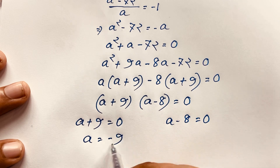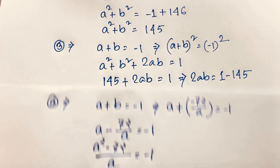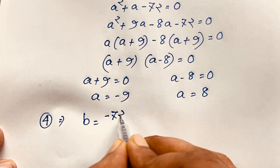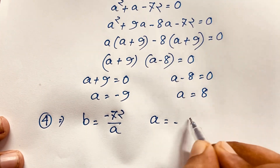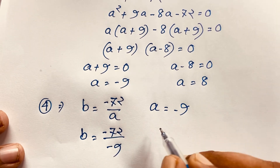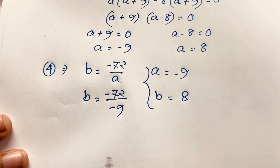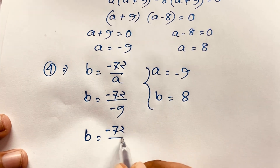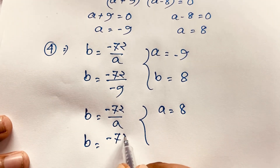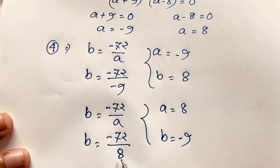From these cases: a equals negative 9, or a equals 8. Using b equals negative 72 over a: when a equals negative 9, b equals negative 72 divided by negative 9, which equals 8. When a equals 8, b equals negative 72 divided by 8, which equals negative 9.